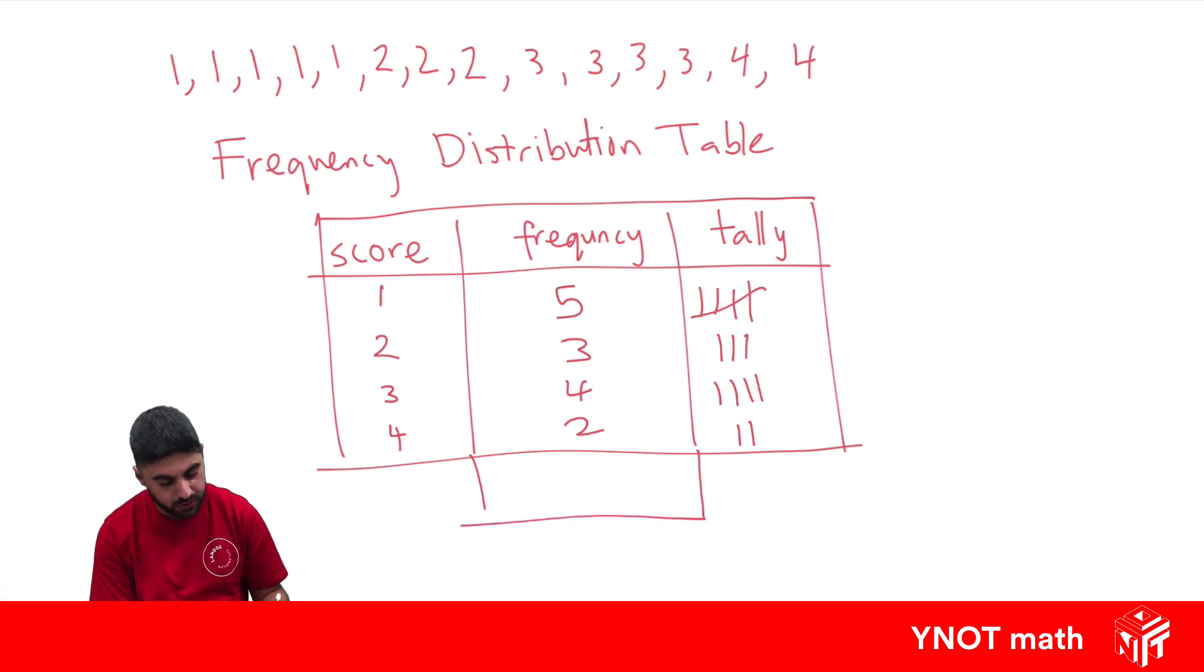And sometimes it helps writing a total under our frequency. So here we've got 14 scores in total if we add up all those numbers. And this is just a nice way of representing our data, and we can easily know how many of these scores we have without having to count them.